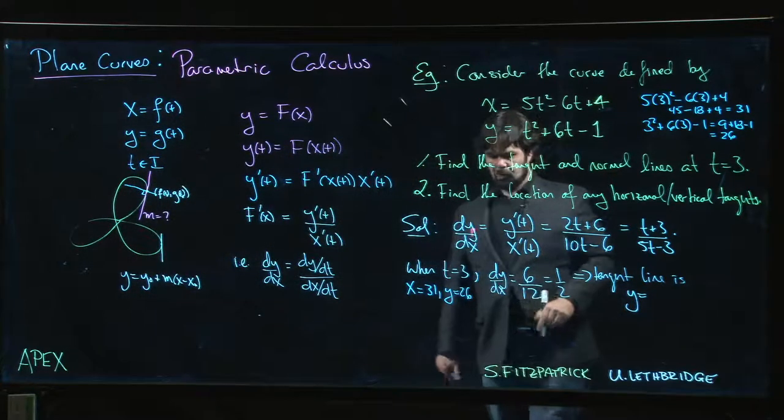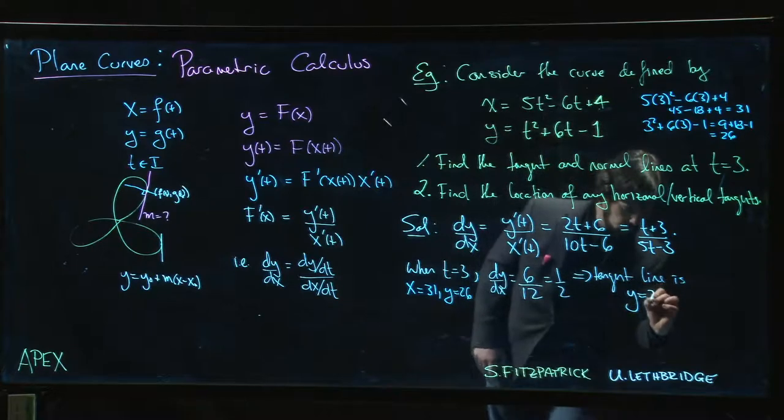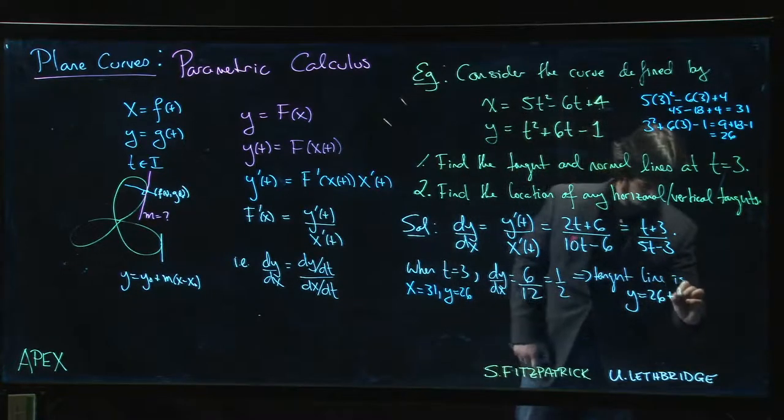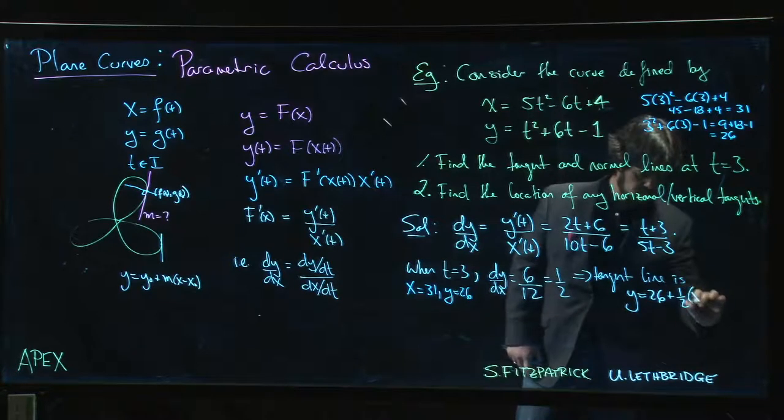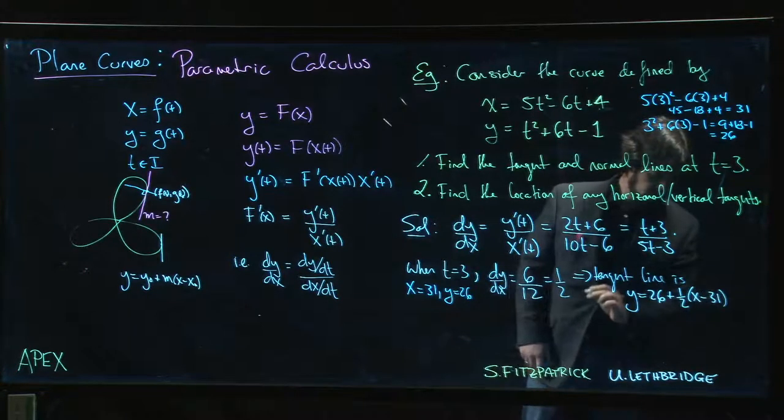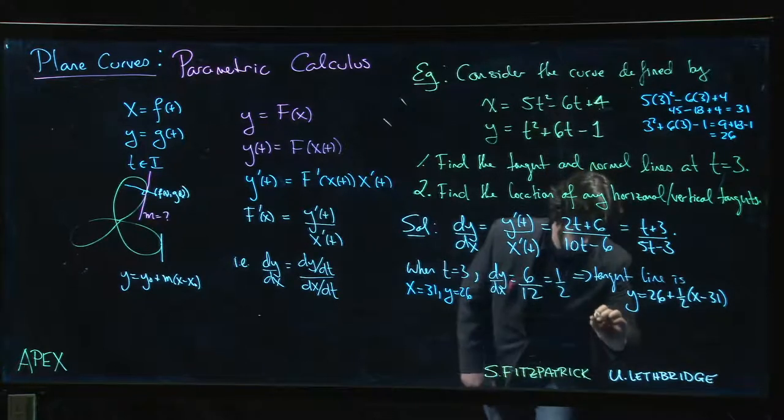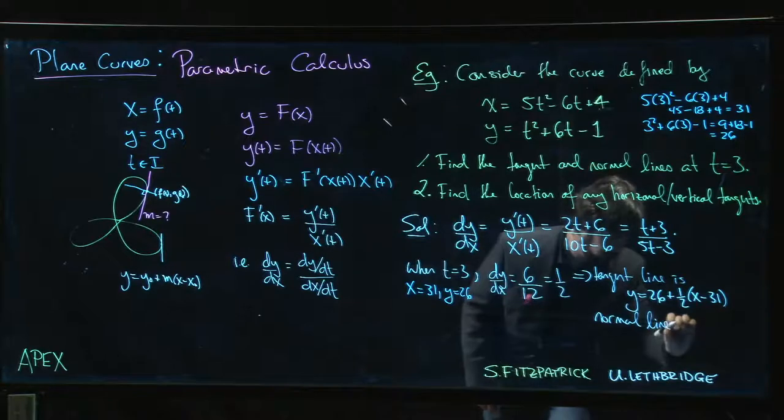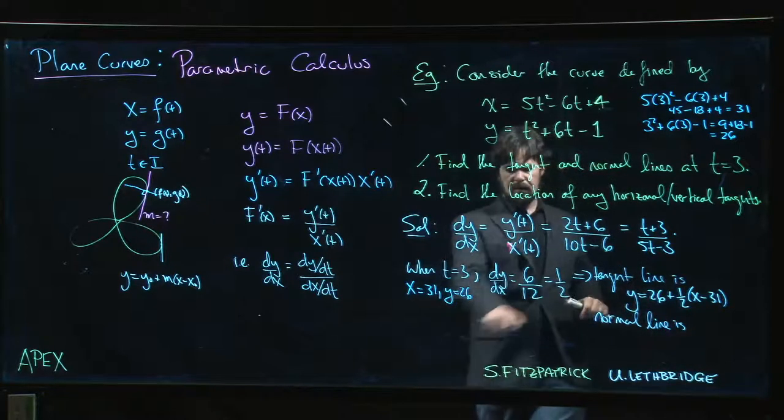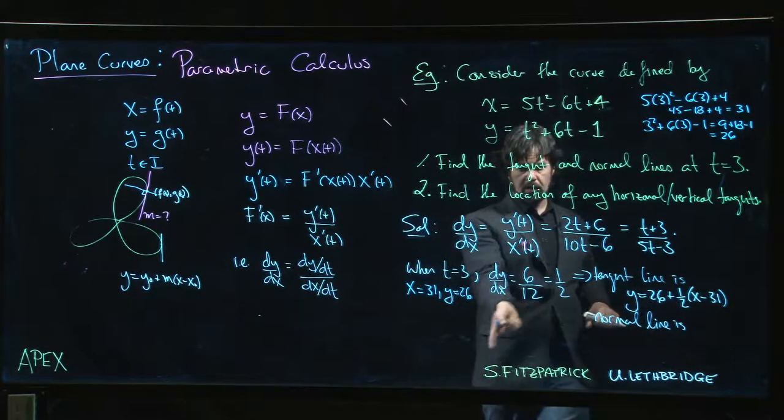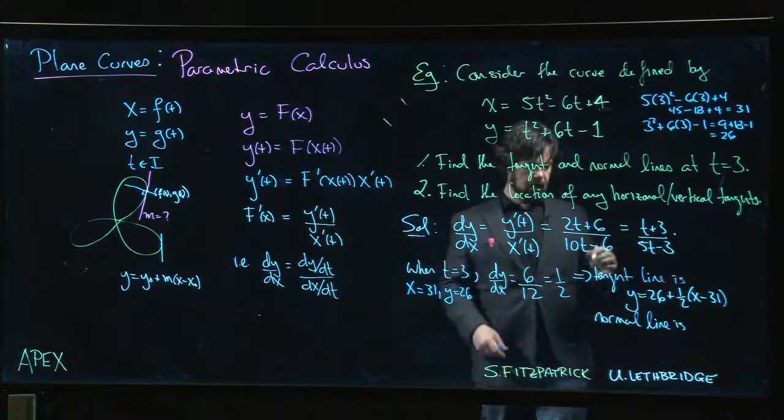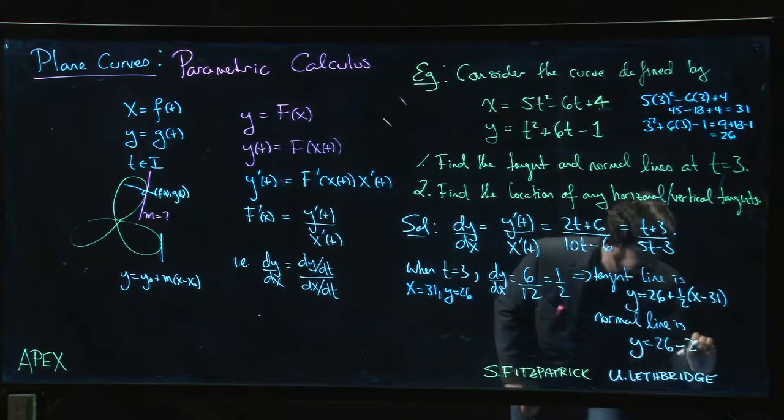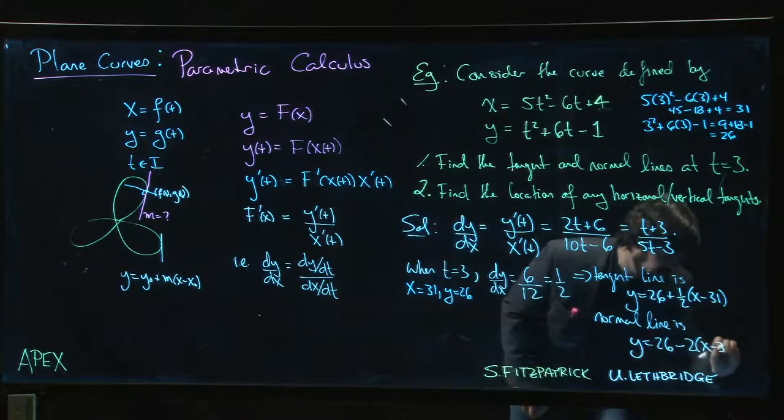So y is equal to 26 plus slope 1/2 times x minus 31. The normal line, well if that's the slope for the tangent line, the normal line we take negative reciprocal, we get minus 2. So we get y is 26 minus 2 times x minus 31.